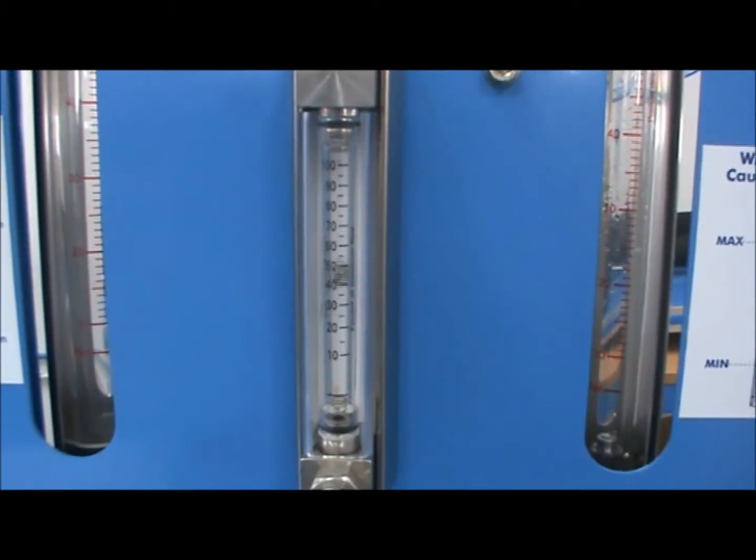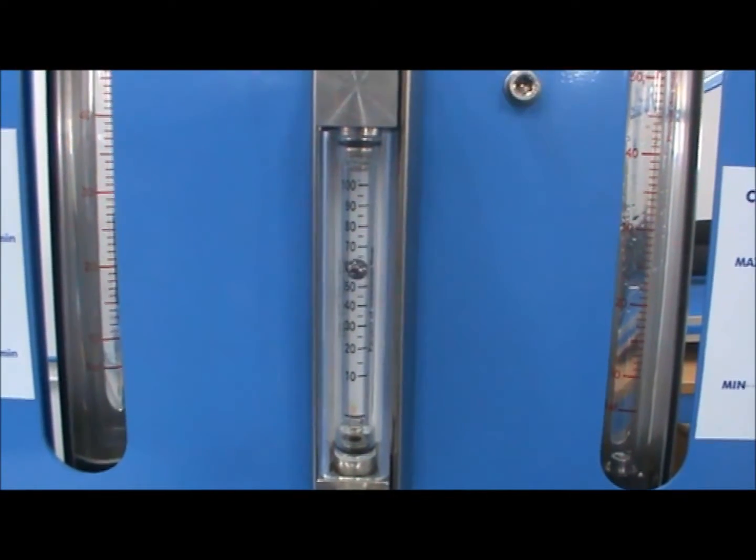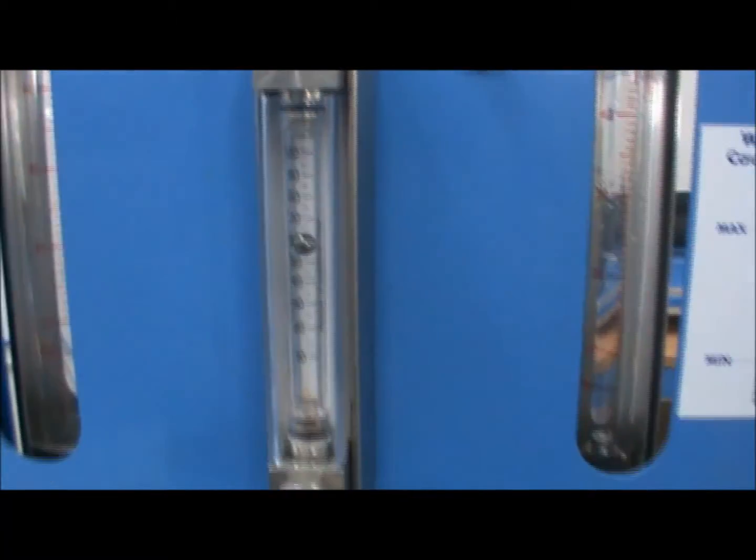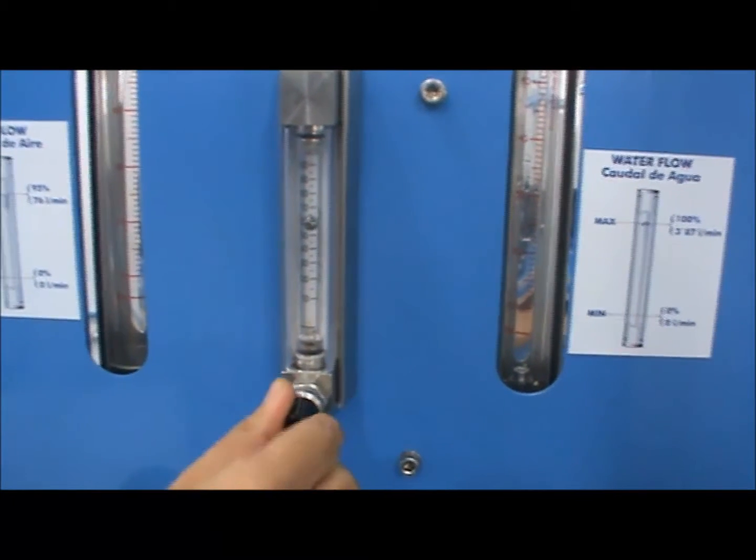Next, open the CO2 tank, providing one bar of pressure to the unit, and adjust the flow as needed. In this experiment, we will use 40%.